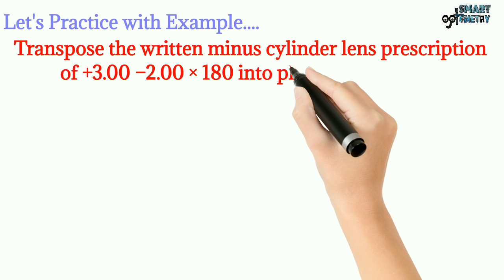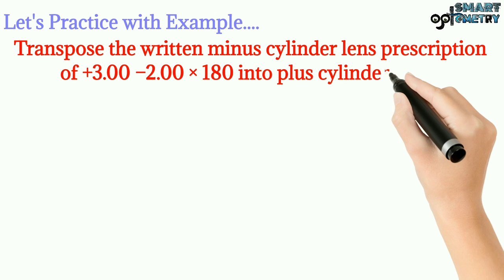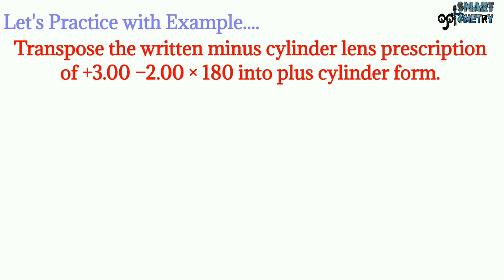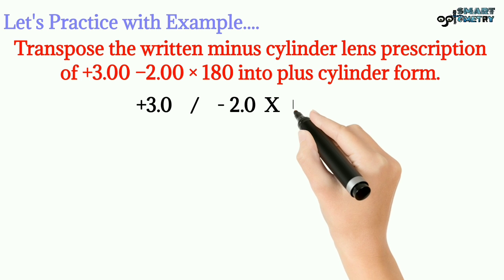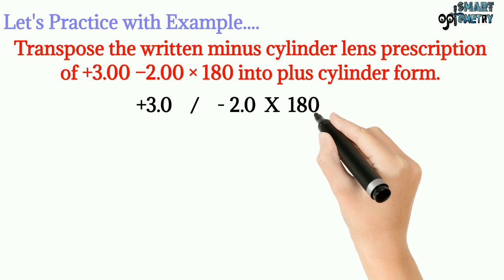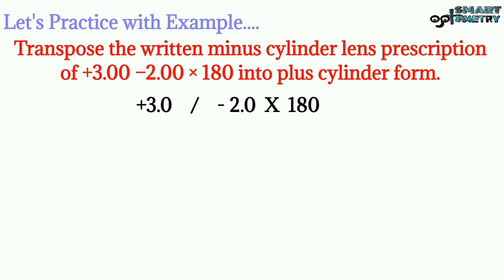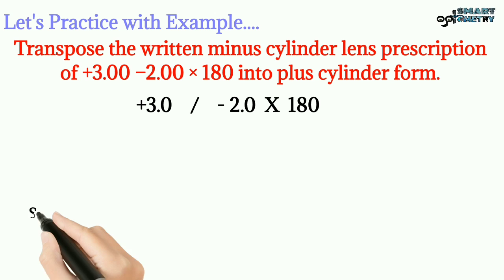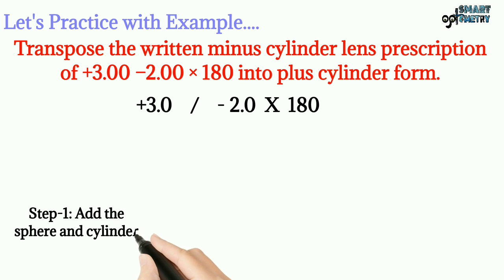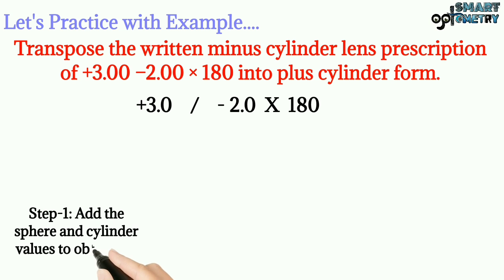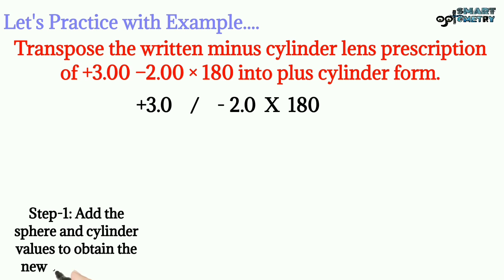Now let's practice with an example. Transpose the written minus cylinder lens prescription — that is plus three with minus two at 180 degree axis — into plus cylinder form. So the given power is plus three with minus two cylinder at 180 degree axis. Now according to step one, add the sphere and cylinder values to obtain the new sphere value.